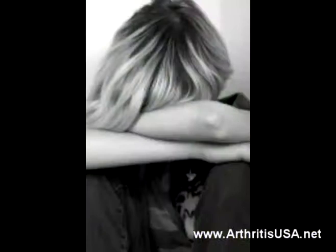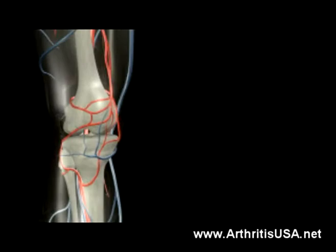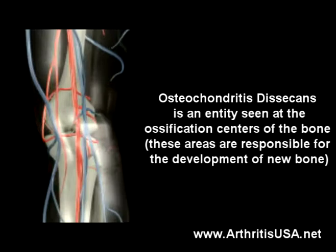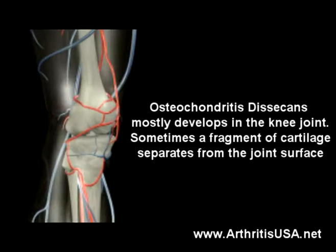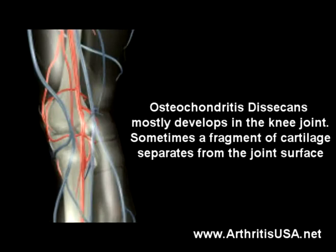Osteochondrosis desiccans is typically seen in young males. It is an entity seen at the ossification centers of the bone — the areas responsible for the development of new bone. It mostly develops in the knee joint, and sometimes a fragment of cartilage separates from the joint surface.